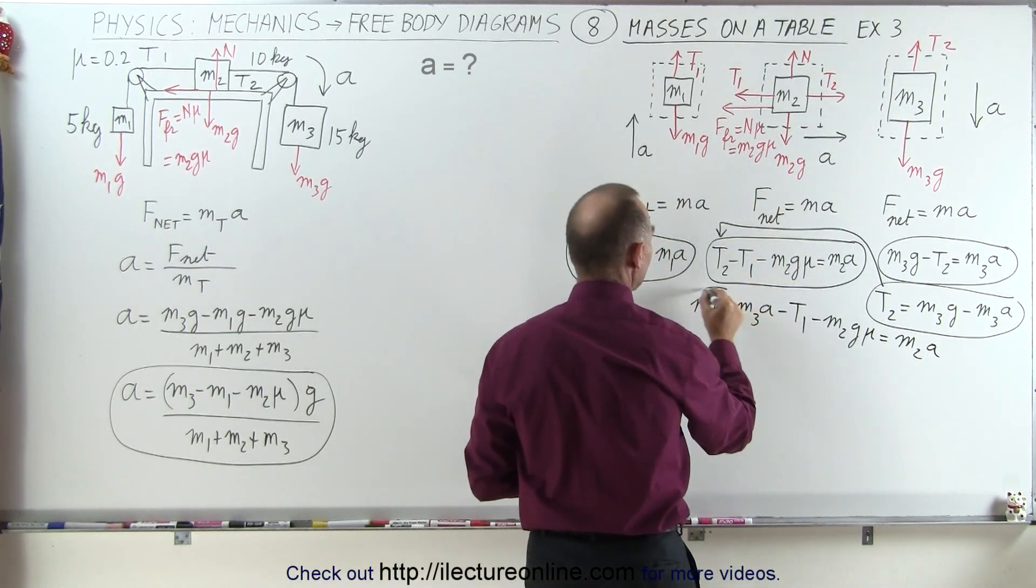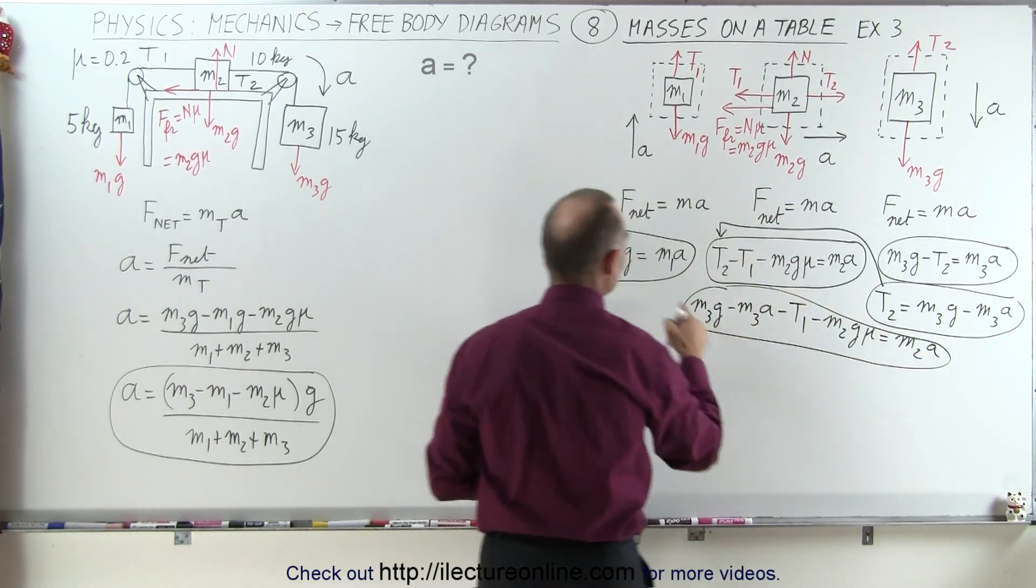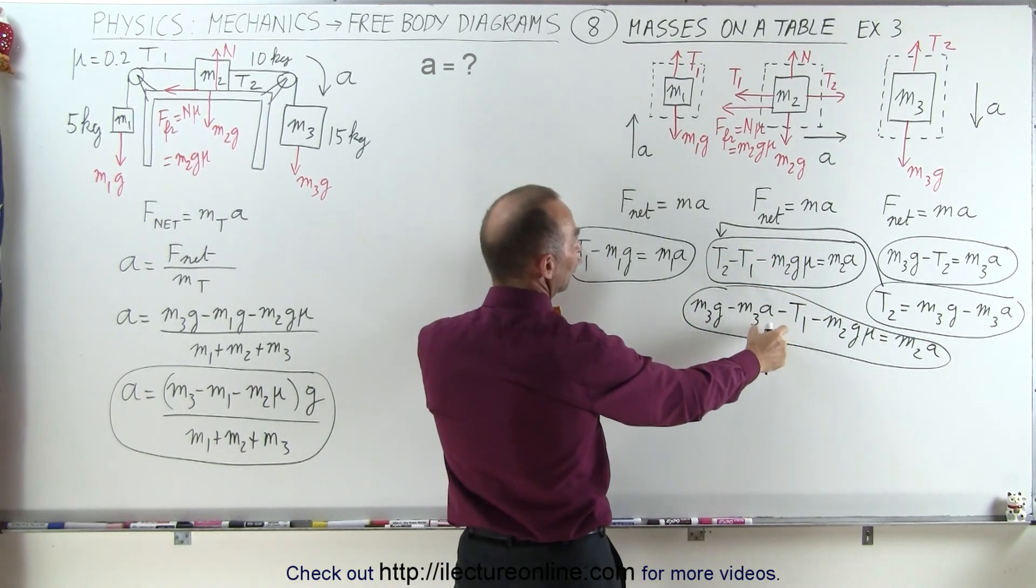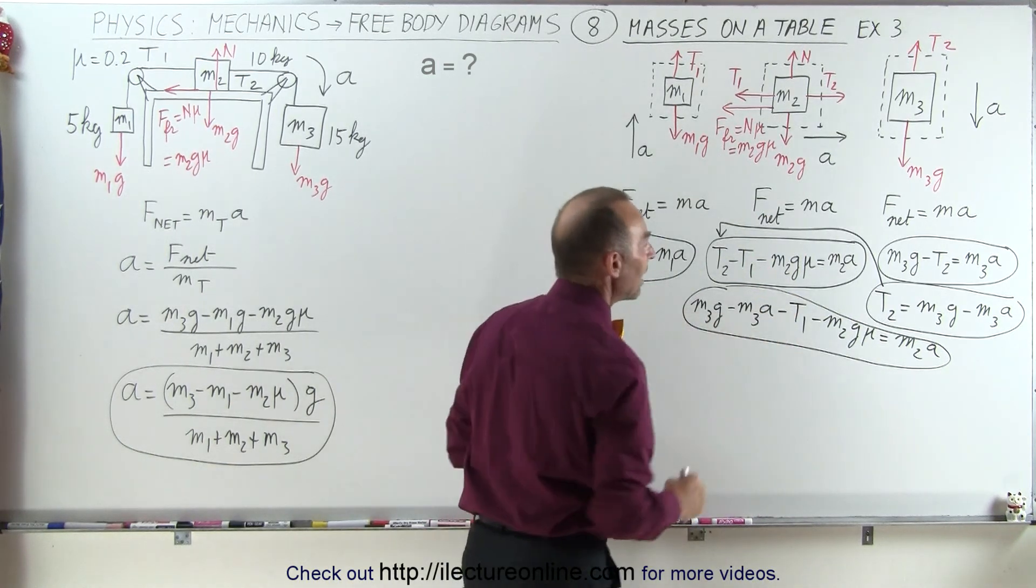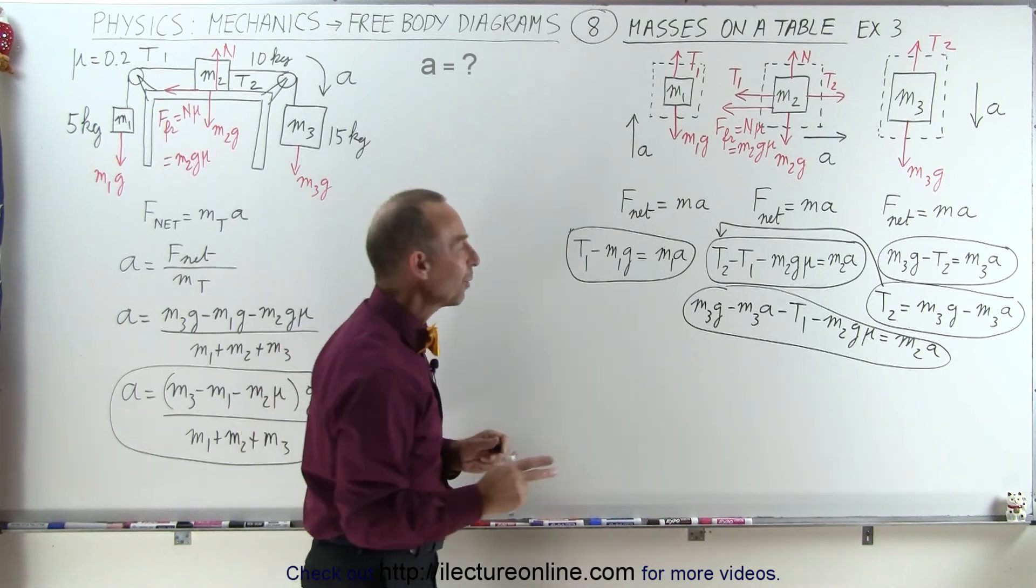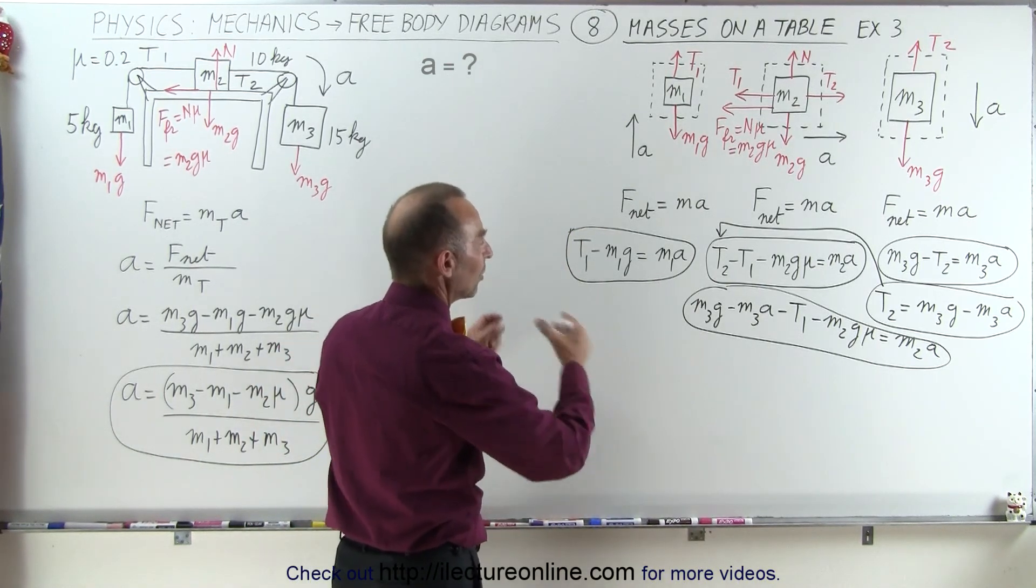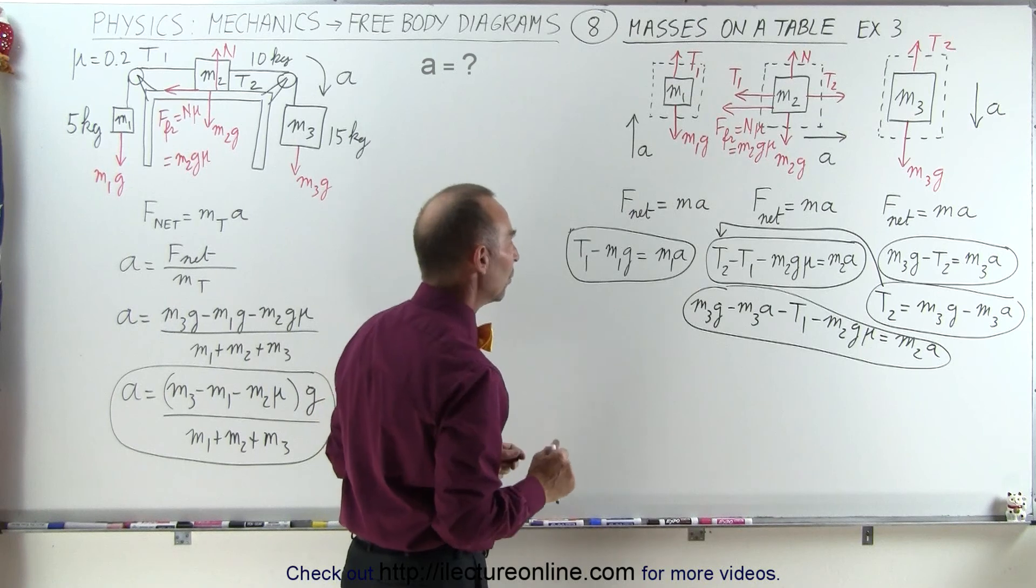And so now we take this equation right here, and we take this equation. Now we have these two equations with just T1 and A. Now we can solve those two equations for T1, and then set them equal to each other to eliminate T1.